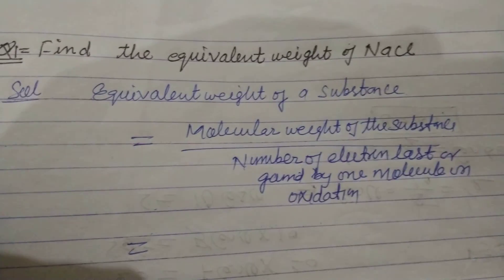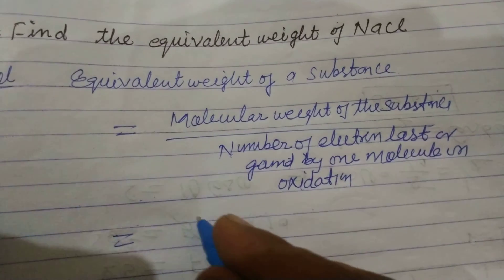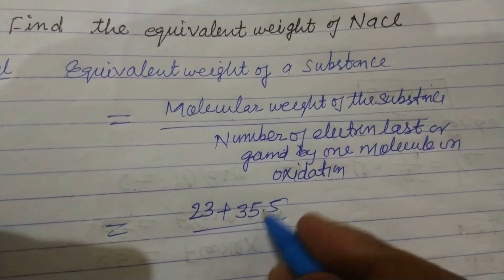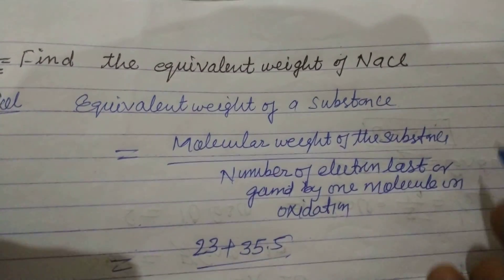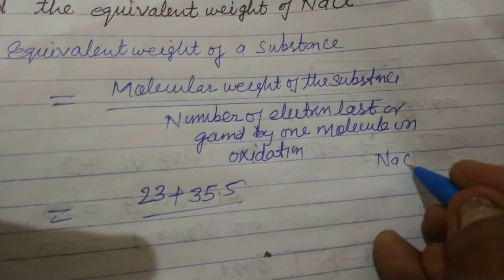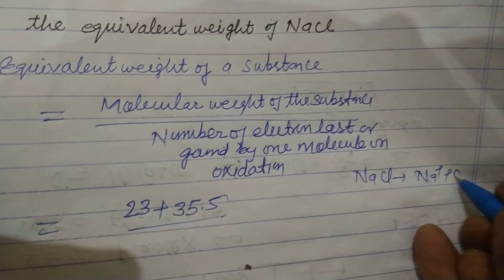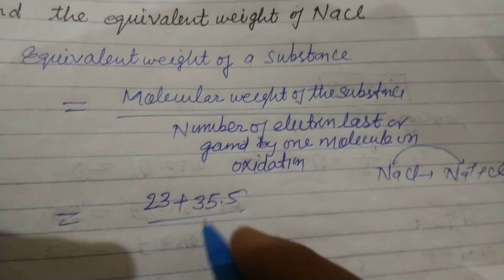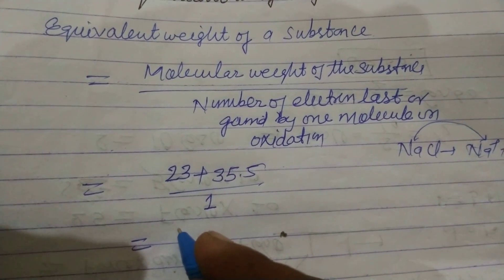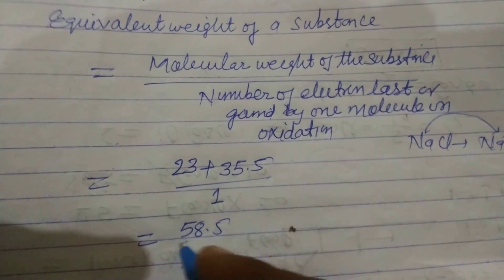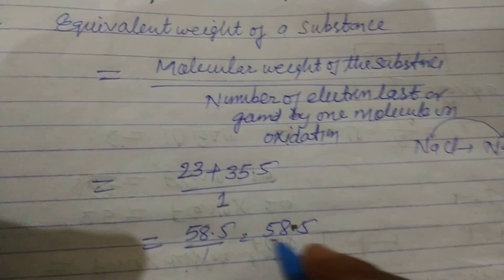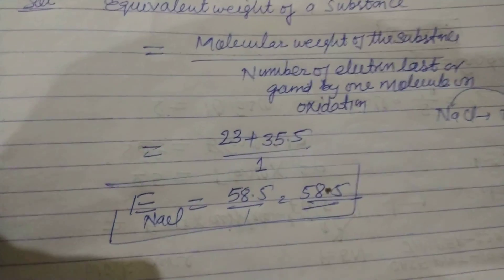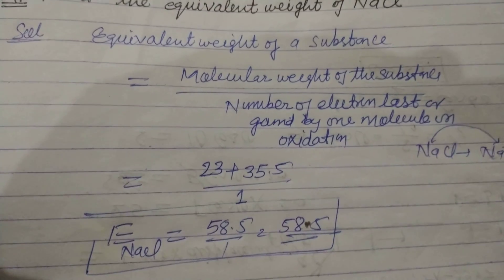The molecular weight of NaCl is Na (23) plus Cl (35.5), upon the valency of NaCl — Na⁺ Cl⁻. As you know, NaCl breaks into Na⁺ and Cl⁻. Here Na is oxidizing and Cl is reducing, so valency is 1. Therefore, this is 58.5 over 1, so 58.5 is the equivalent weight of NaCl. In this way we found the equivalent weight of NaCl.